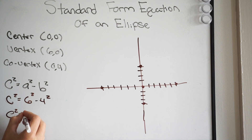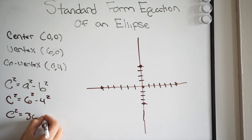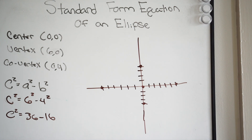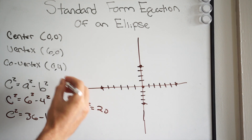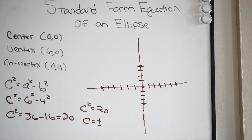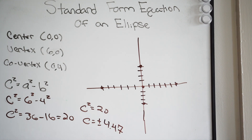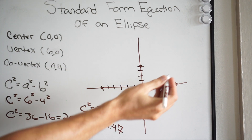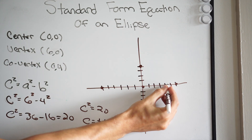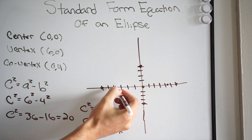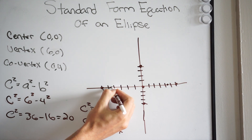Working this out: c squared equals 36 minus 16, which gives us 20. So c squared equals 20. Taking the square root of both sides, c equals plus or minus the square root of 20, which is approximately plus or minus 4.47. That is where both of our foci are occurring — on the major axis (the x-axis), so we go over approximately 4.47 in each direction.